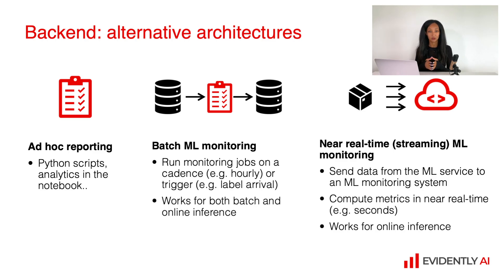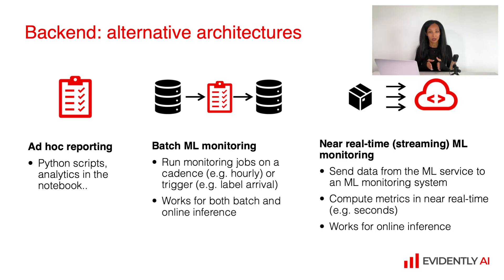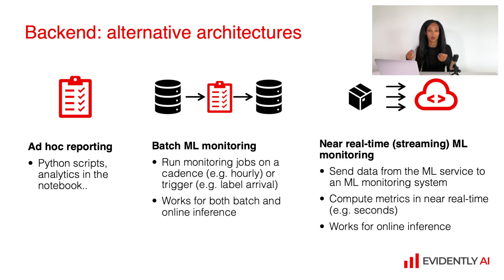In this case, you need to create a pipeline with metrics calculation and read the data — for example, from logs or a database where you store all the data your service received, all the outputs, and maybe labels. Then you just decide on a cadence and run your monitoring pipeline.